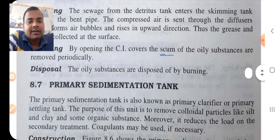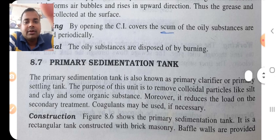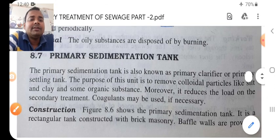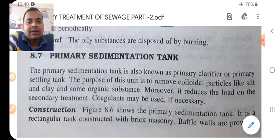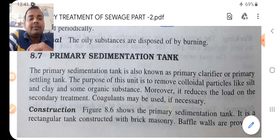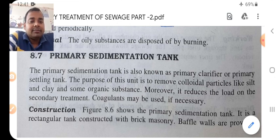The skimming tank is very important — short notes or short questions on this topic arise in the semester exam. Next is the primary sedimentation tank, which is also very important. The primary sedimentation tank is also known as the primary clarifier or primary settling tank. The purpose of this unit is to remove colloidal particles like silted clay and some organic substances. It also reduces the load on the secondary treatment. Coagulant may be used if necessary.